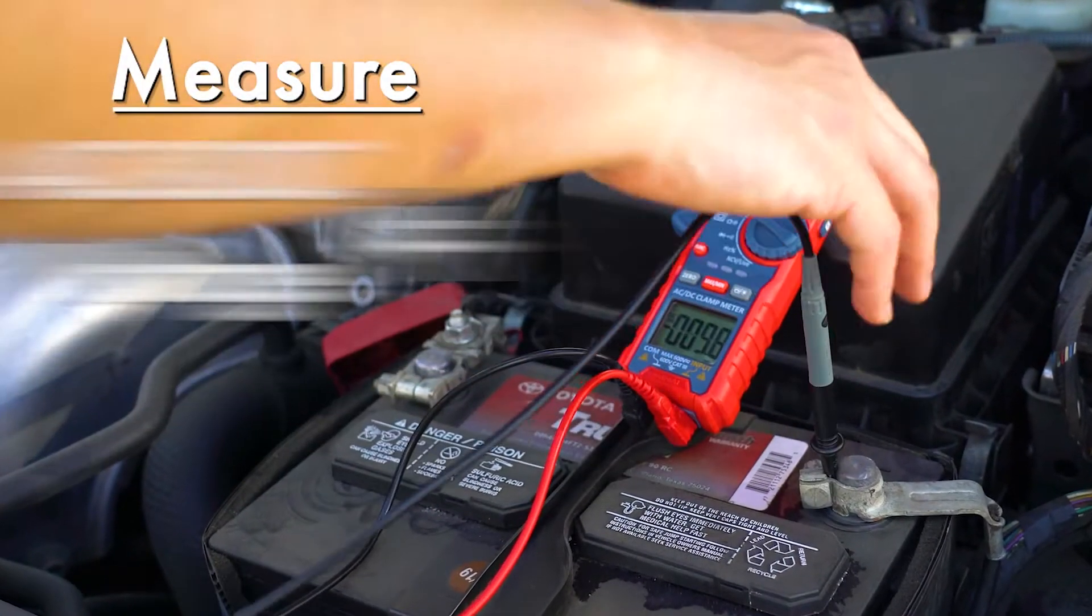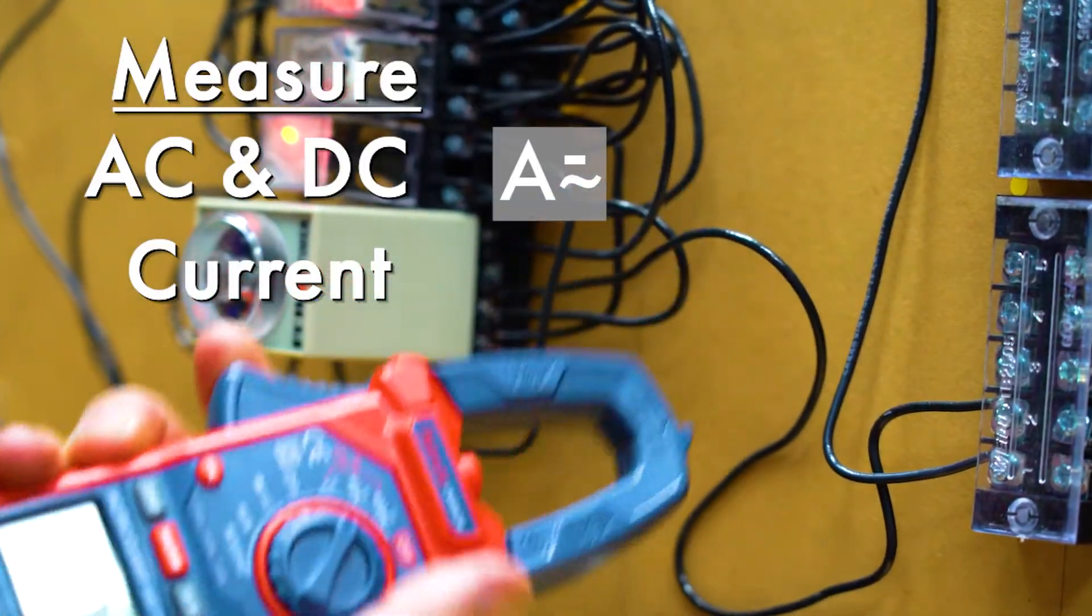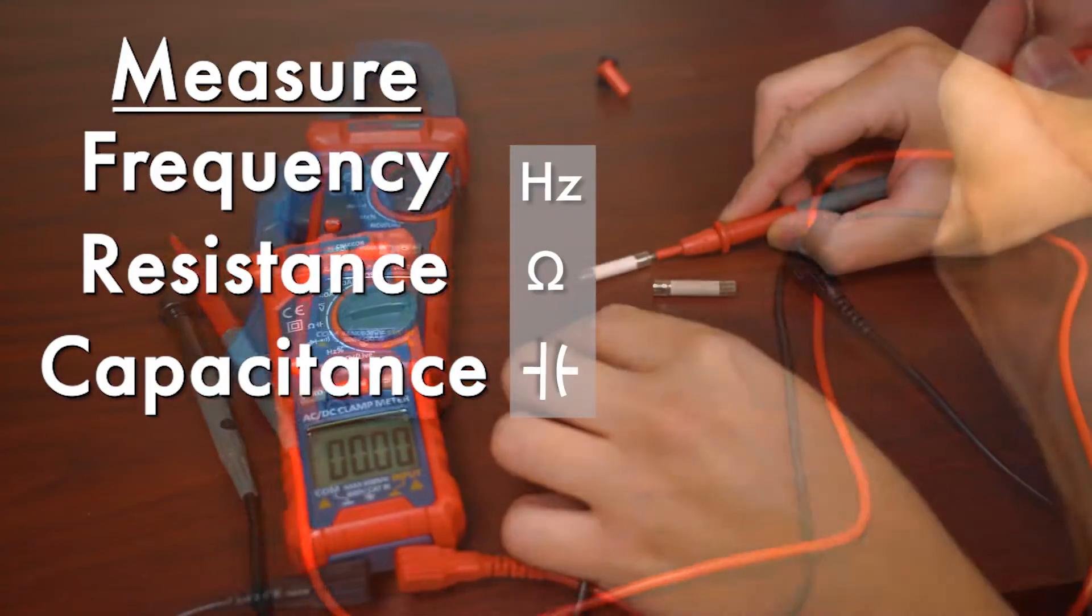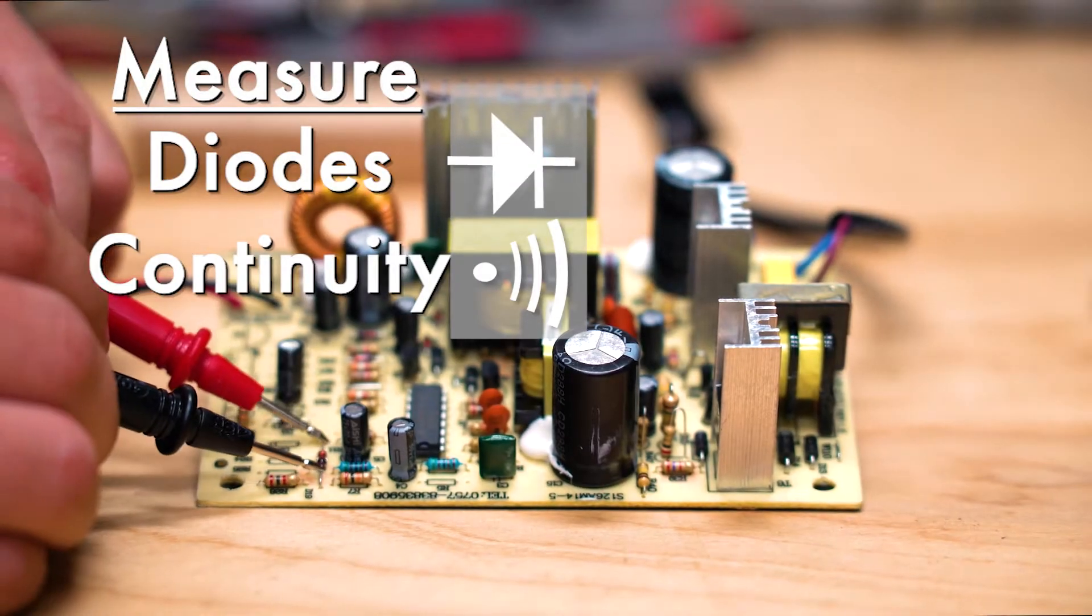Measure everything from AC and DC voltage to AC current, frequency, resistance, and capacitance. You can also test diodes and circuit continuity.